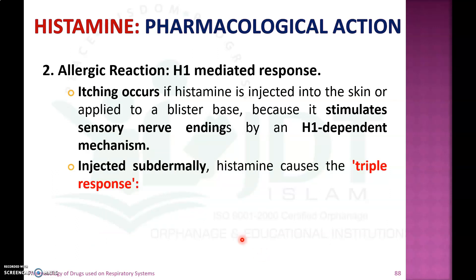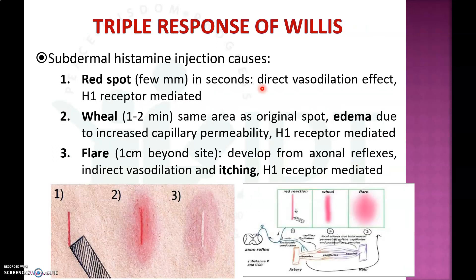The second pharmacological action involves allergic reactions produced by H1-mediated responses, such as itching. Injecting histamine into the skin produces itching due to stimulation of sensory nerve endings via the H1-dependent mechanism. Injecting histamine subdermally produces a triple response, also known as the triple response of Lewis.